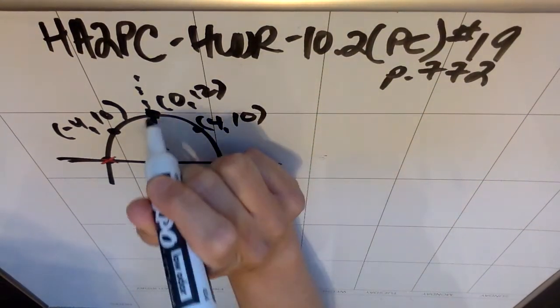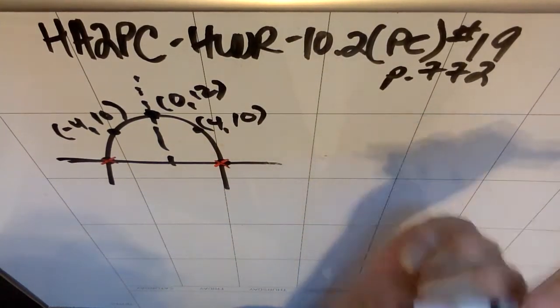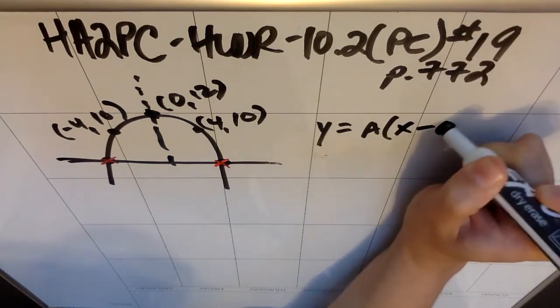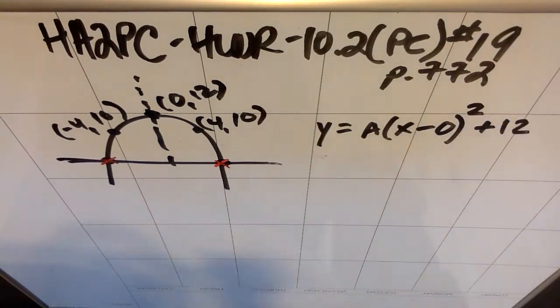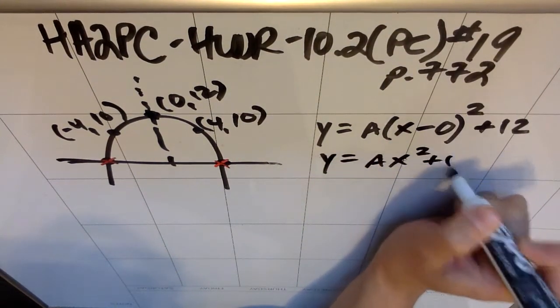I know that this parabola has its vertex at the very top. I know that the vertex is 0 comma 12. So essentially I know y equals a(x minus 0) squared plus 12. So the equation is y equals ax² plus 12.